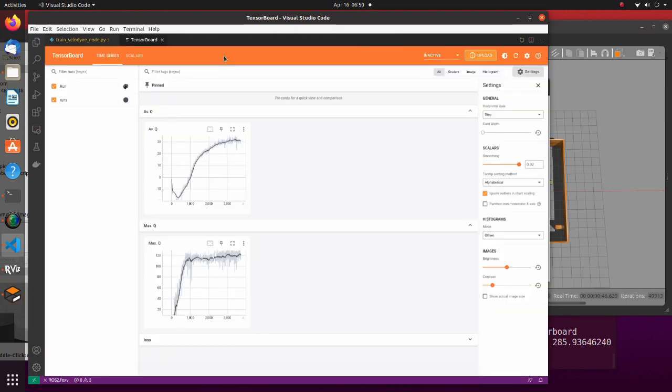Note that the graph here is describing the state after the training is complete. Here we can see that it takes about 3700 steps for Q average value to converge.